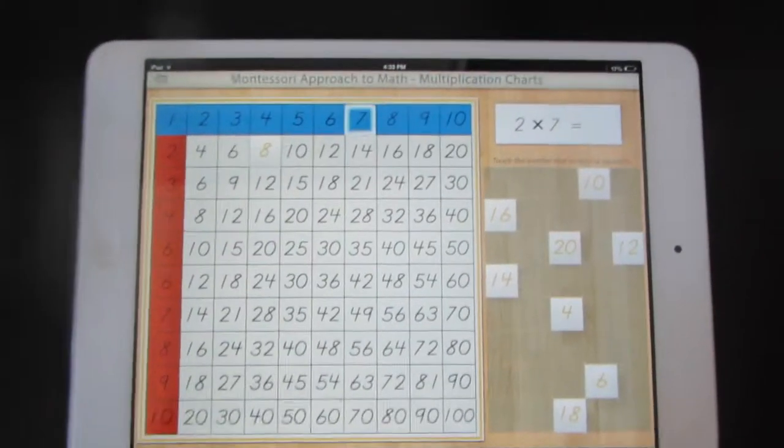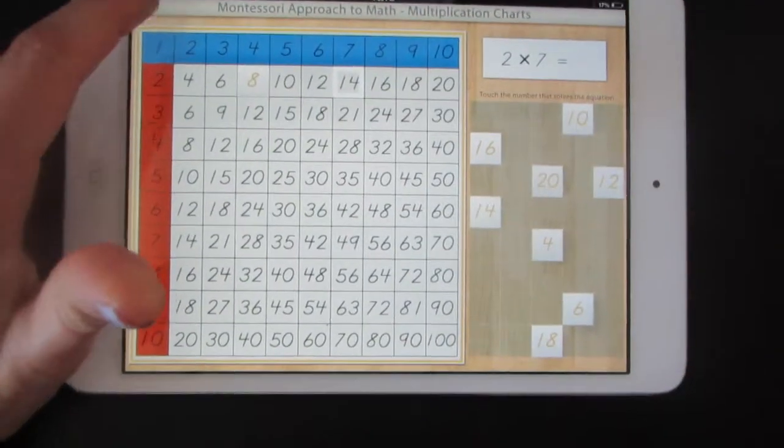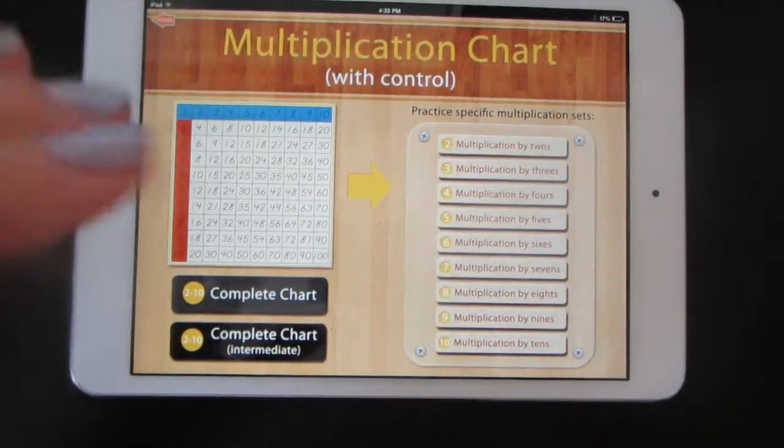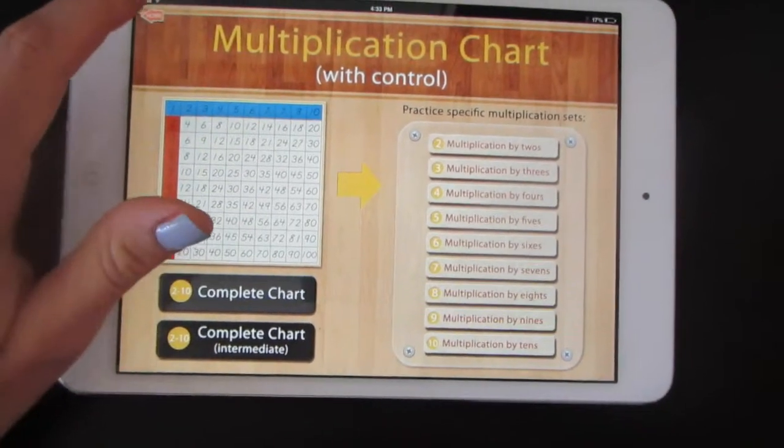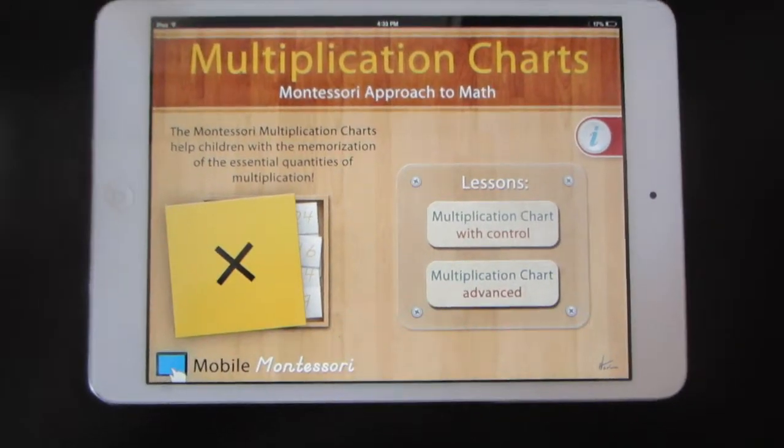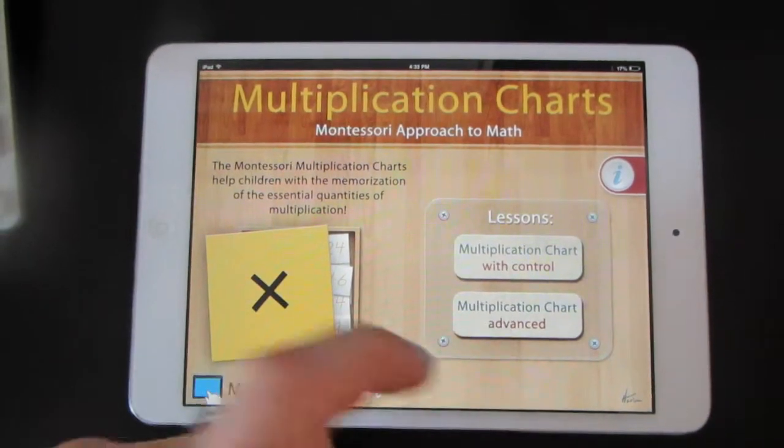When you've got the hang of it and you're learning your table, go back to the main menu and tap home. Then try multiplication chart advanced.